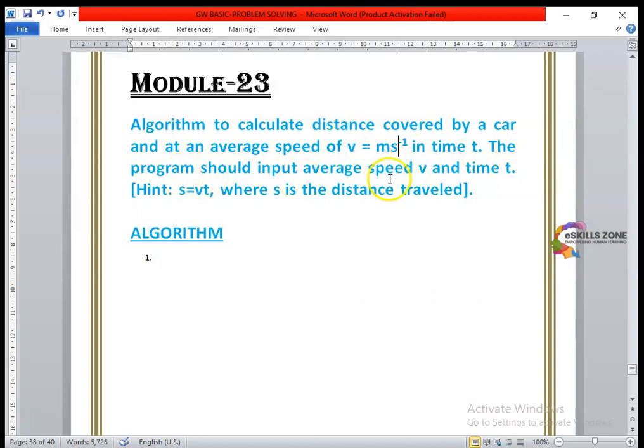So the program should input average speed V. V is used to denote speed and time T. How far the car covers the distance in time T. So we need to calculate this by using the formula S is equal to V into T.